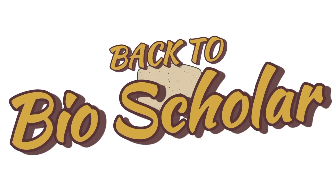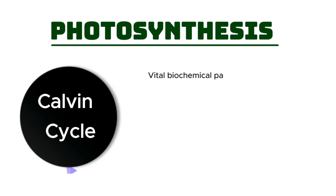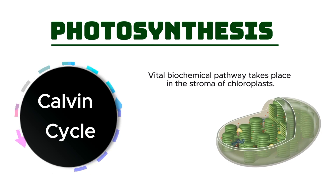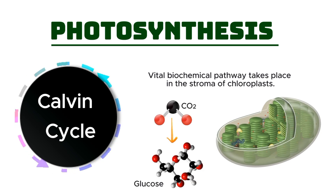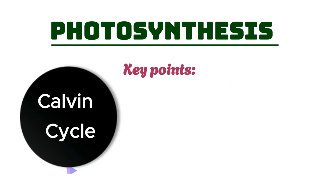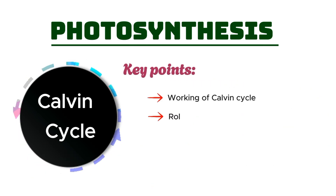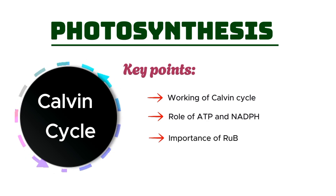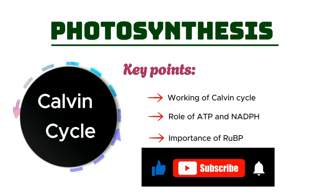Welcome to Bioscholar, where we explore the intricate processes that fuel life on Earth. Today, we're diving into the heart of photosynthesis — the Calvin Cycle. This vital biochemical pathway takes place in the stroma of chloroplasts and is responsible for transforming carbon dioxide into glucose, the energy source that powers nearly all life. But how does this cycle actually work? What role do ATP and NADPH play? And why is RuBisCO called the most important enzyme on the planet?